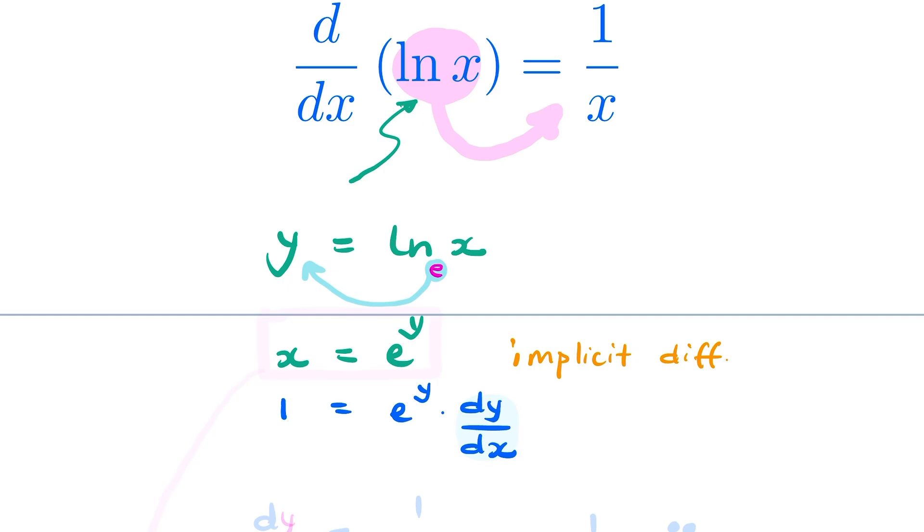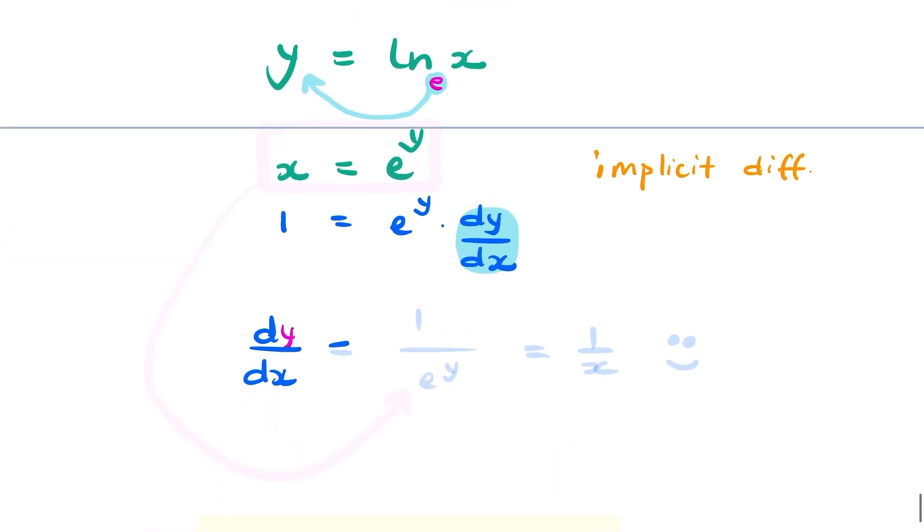Now I can rearrange that to find dy over dx. So dy over dx equals 1 over e to the y.